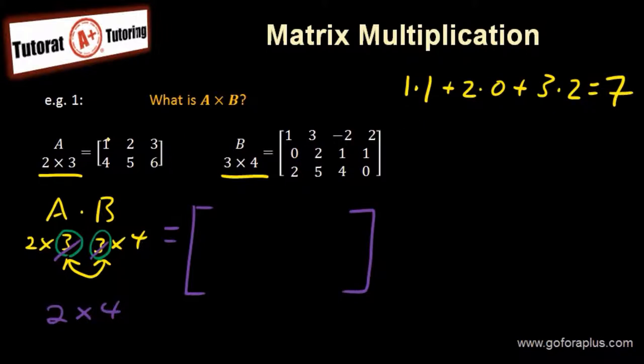Now the next one. First row, second column. 1 times 3 plus 2 times 2 plus 3 times 5. This is giving you 1 plus 4 plus 15, so it's 22.